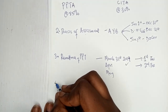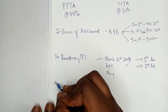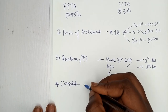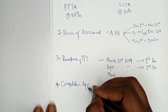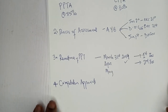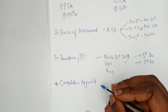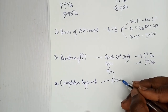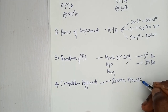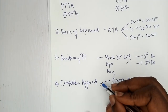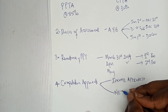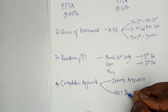The fourth part covers the computation approaches of PPT. There are two: the income approach, which is the most popular, and the net profit approach. These two approaches will be demonstrated when solving exam questions.